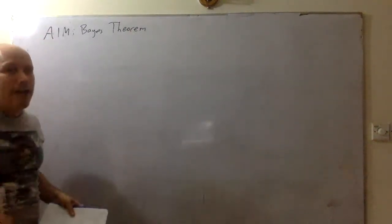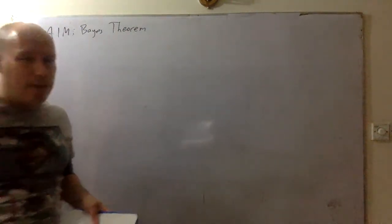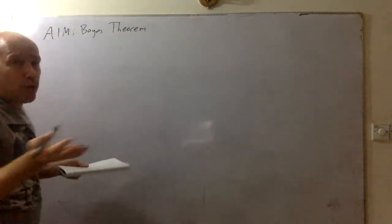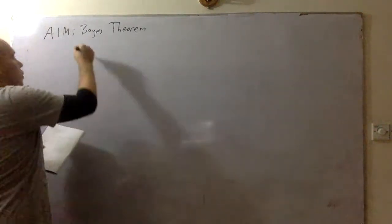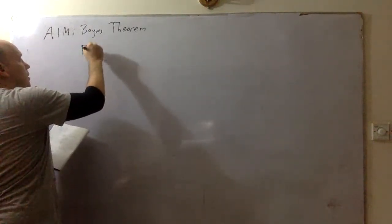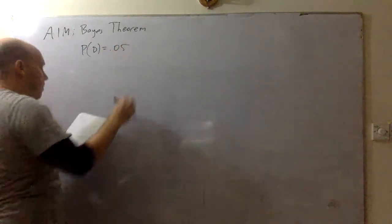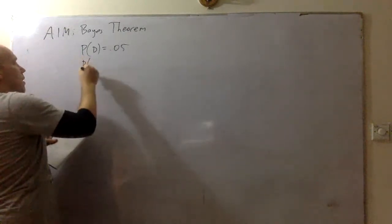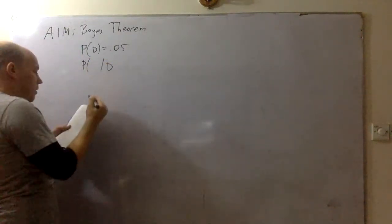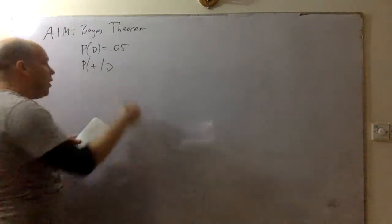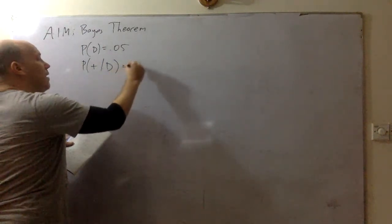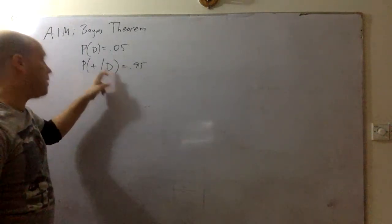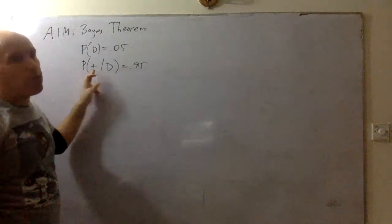These type of problems show up in epidemiology and the idea of what order something happens. So let's say that we're in the middle of COVID right now. Let's assume that the probability that you get the disease is 5%. Given you have the disease, the COVID test will tell you you're positive 95% of the time.